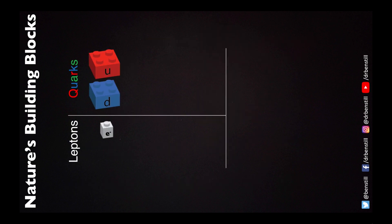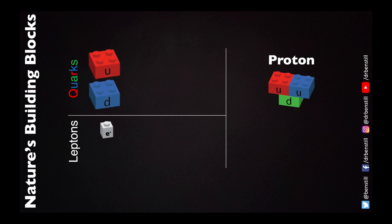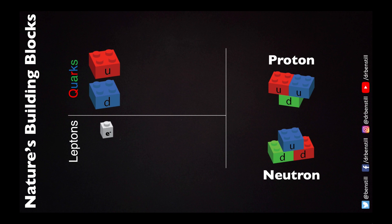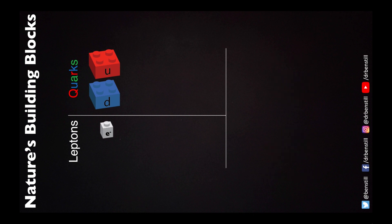This is our picture of the universe with three fundamental particles. The fundamental particles that make up the proton and the neutron are the up quark and the down quark. To make a proton, you need to put two up quarks on top of a down quark. To create a neutron, you need to put one up quark on top of two down quarks. The proton will be positive one in electric charge, the neutron will be zero in electric charge. And then, of course, there's the electron.